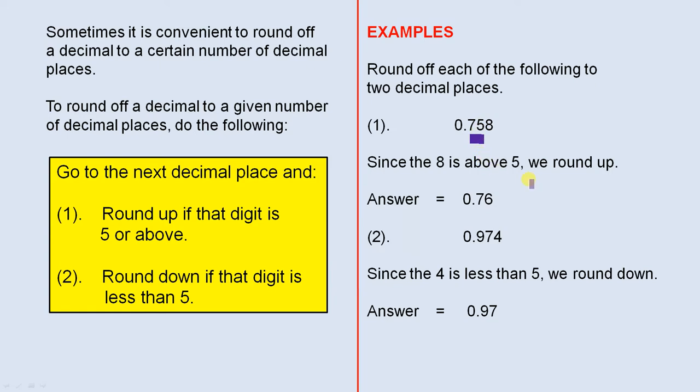So since 8 is above 5, we round up. So the answer is 0.76. All you do, you increase the 5 by 1. So you take it from 5 to 6, and that's why that's the answer.